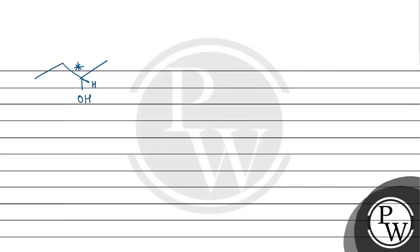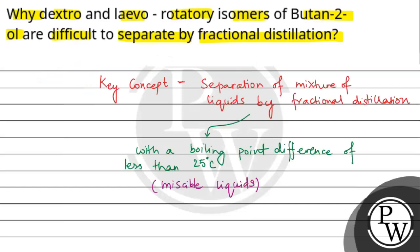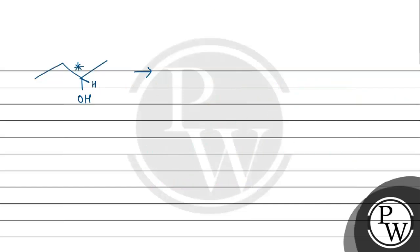We have the dextro and levorotatory forms. The dextro form will be CH3, C-OH, CH2CH3. This is D form and L form will be the mirror image, that is OH, CH3, CH2CH3.